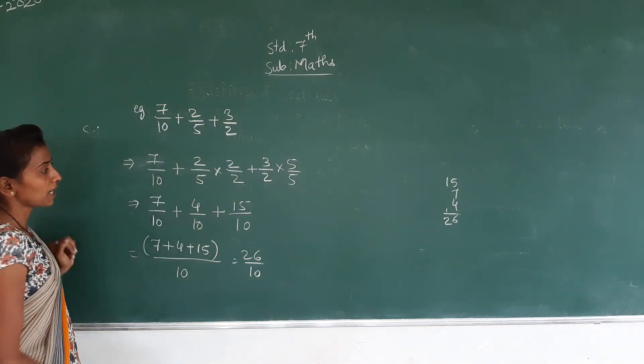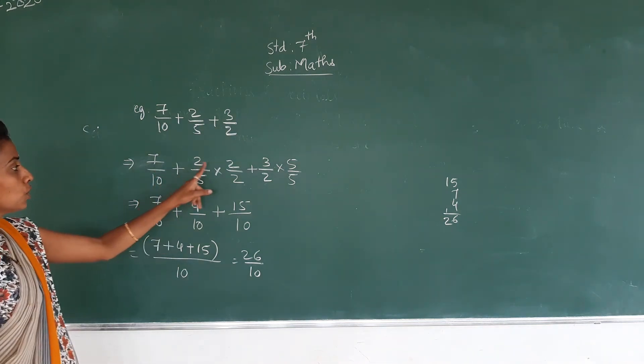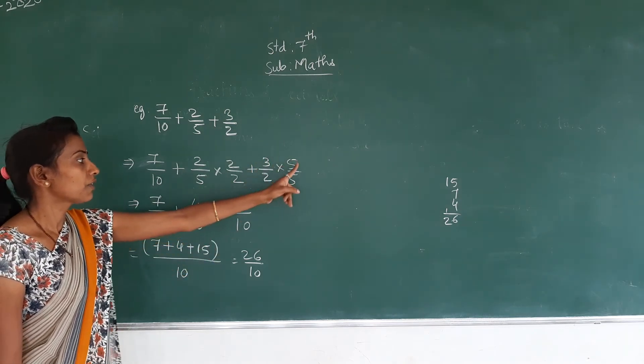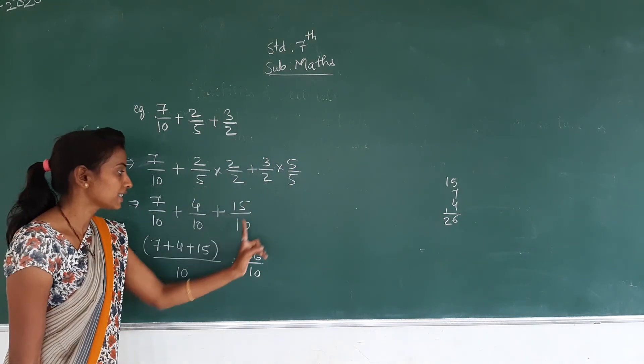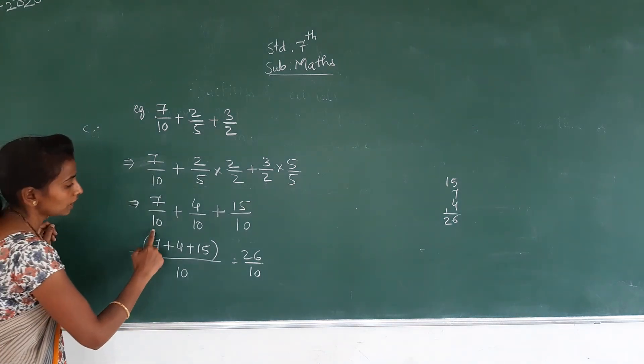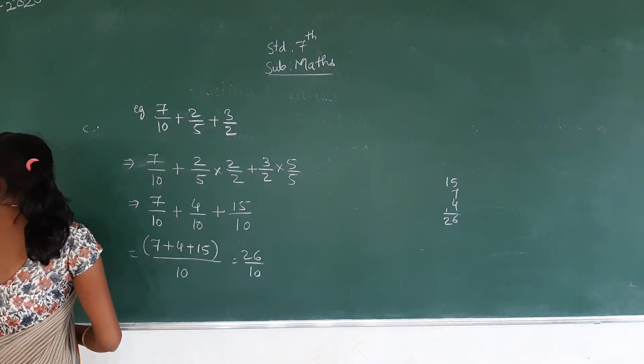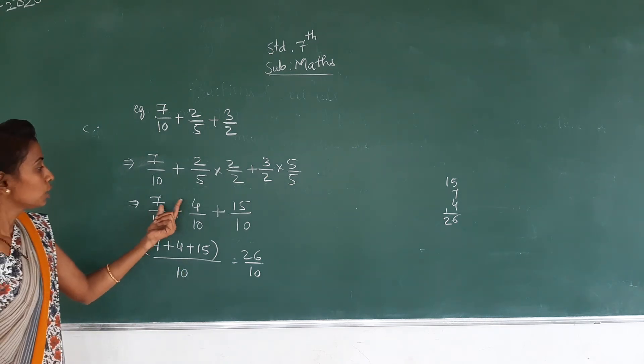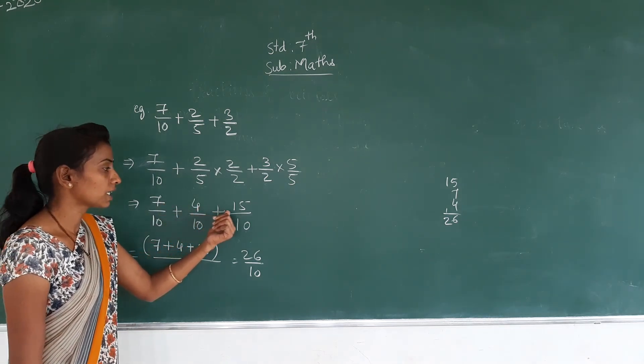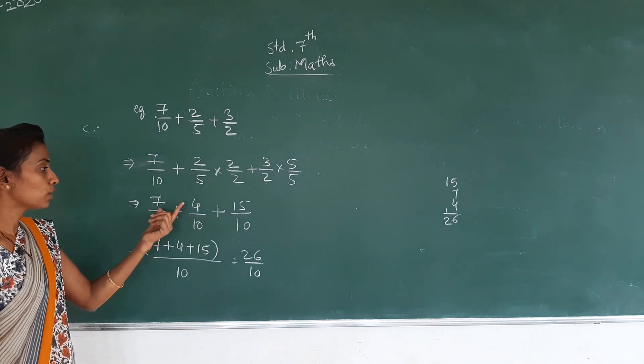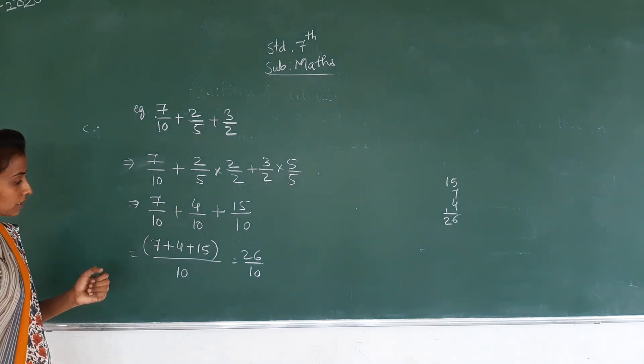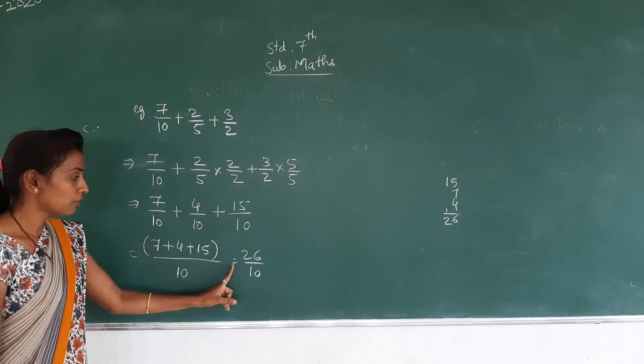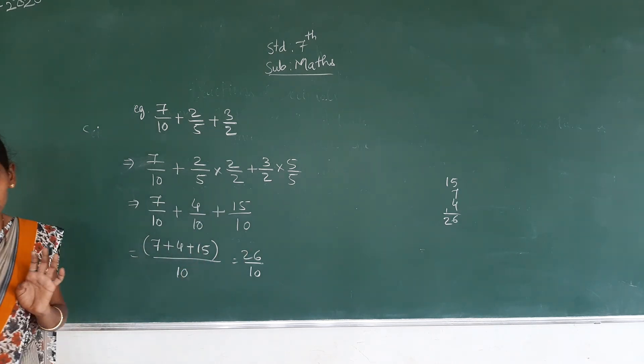Here 7/10 keep as it is, plus 2 becomes 4, 5 becomes 10, plus 3 becomes 15, 2 becomes 10. So all denominators are 10. Write 10 as it is. Now you have to add all the numerators: 7 + 4 + 15 equals 26/10.